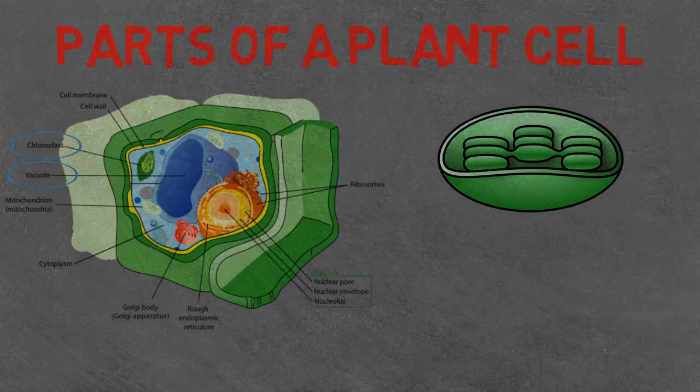The vacuole. You might have noticed the animal cell has a vacuole. However, the plant cell has a much larger vacuole as they require to store more water, sugars, ions, amino acids, and waste.